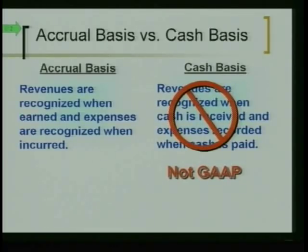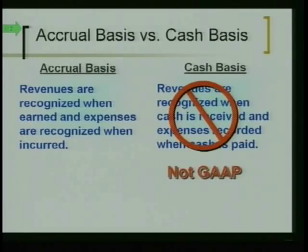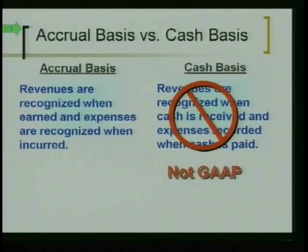What we use is the accrual basis of accounting. With the accrual basis, we recognize revenues when they are earned — and when are they earned? When the product or service has been provided. It doesn't necessarily hinge on when cash comes in. We recognize revenues when they are earned and we record expenses when they are incurred. The accrual basis of accounting is what we utilize in our financial statements, and I'll show you some examples of why we do that.